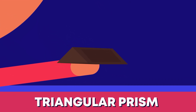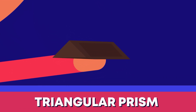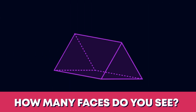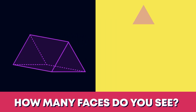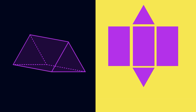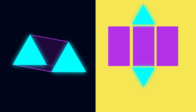This chocolate bar is a triangular prism — repeat after me: triangular prism! How many faces does a triangular prism have? It has one, two, three, four, five — great counting everyone!